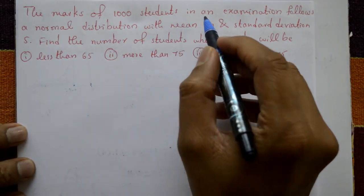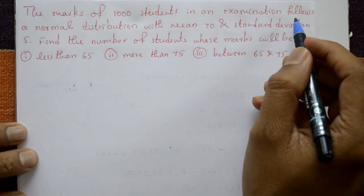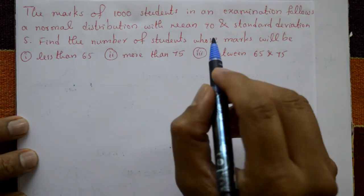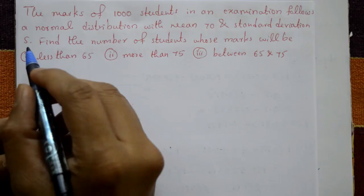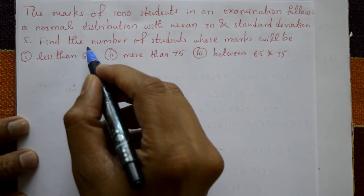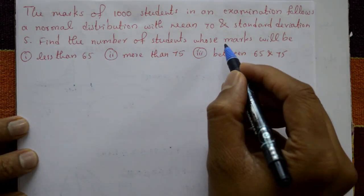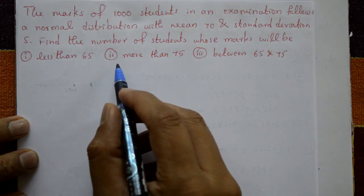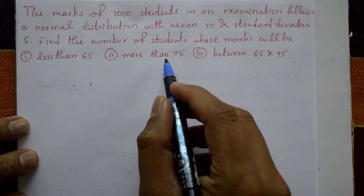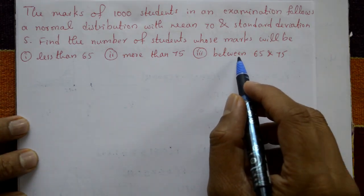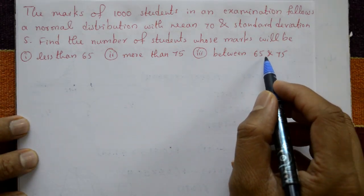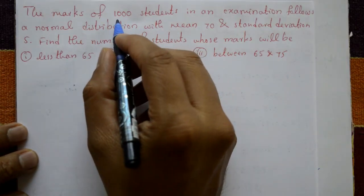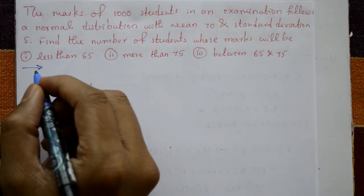The mass of 1000 students in an examination follows a normal distribution with mean 70 and standard deviation 5. Find the number of students whose mass is: Case 1 — less than 65, Case 2 — more than 75, Case 3 — between 60 and 75.